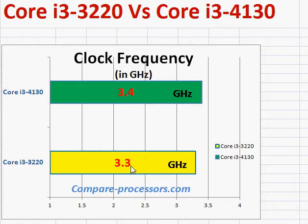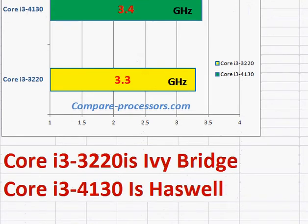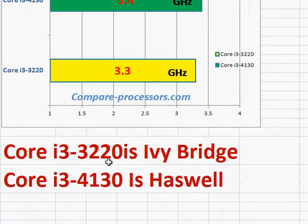Not only does frequency play a role in making it faster, but the Core i3-4130 is also a newer Haswell processor, while the 3220 is the older Ivy Bridge-based processor. In each new generation, Intel tweaks its architecture making it a little faster even at the same clock frequency.